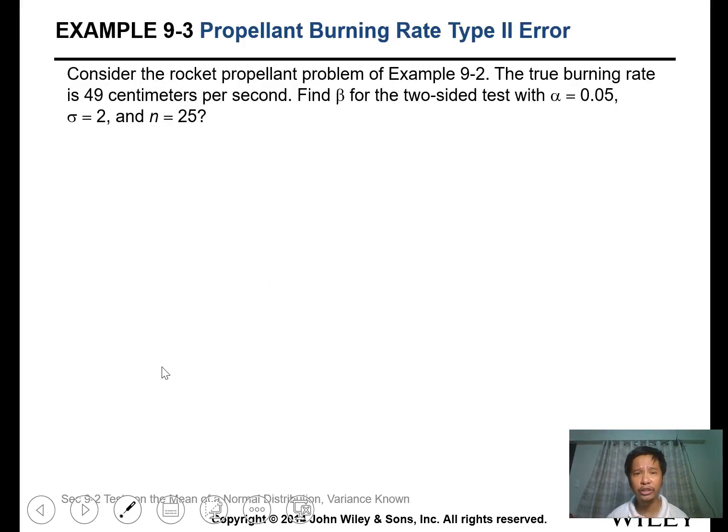Consider the rocket propellant problem from earlier with known variance. The true burning rate is 49 centimeters per second. Find beta for the two-sided test with alpha equals 0.05, sigma equals 2, and n equals 25. The delta equals 1, which is the difference between the actual 49 and our mean value of 50.